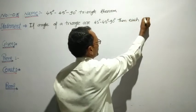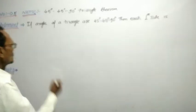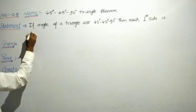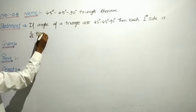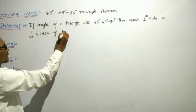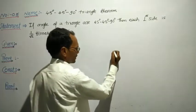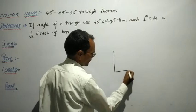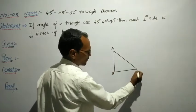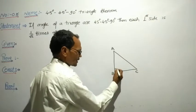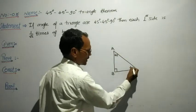then each perpendicular side is 1 by root 2 times the hypotenuse. So I can draw the figure. In right angle triangle ABC, angle B is the right angle. The other two angles are 45 and 45 degrees.